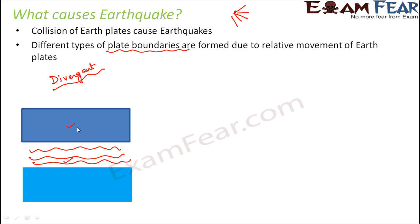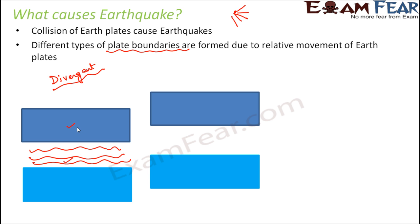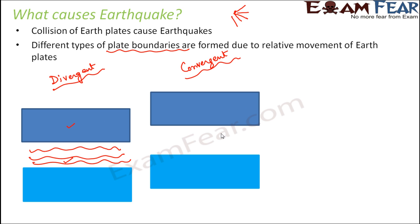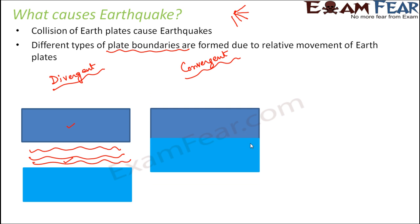The next type is the convergent type, which is just the opposite. Here, two plates slide and come and strike each other. So when plates slide towards each other, that is called a convergent plate boundary. In this case, it results in the closure of ocean basins, because initially some ocean basin or water body would have existed, but due to this type of collision, it leads to the closure of the ocean basin.